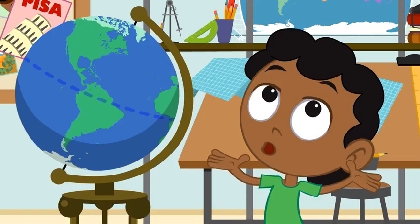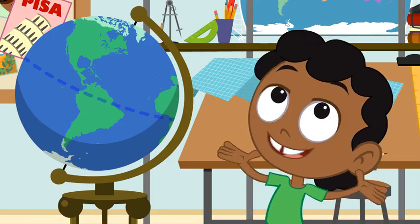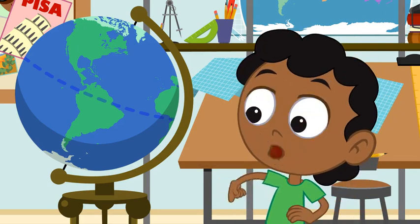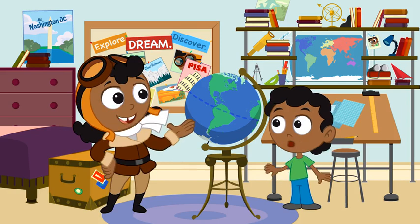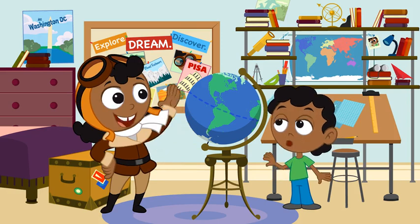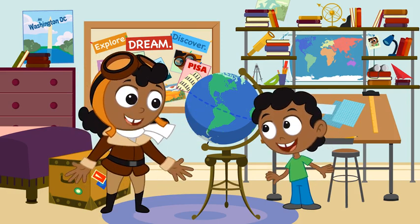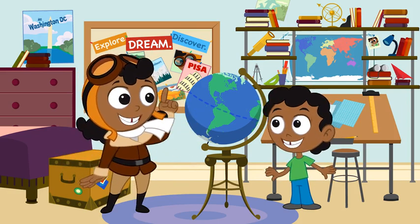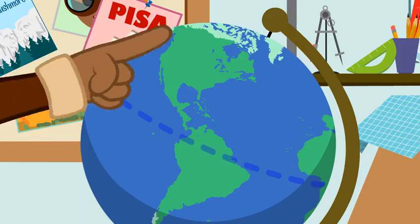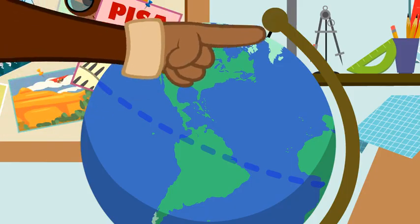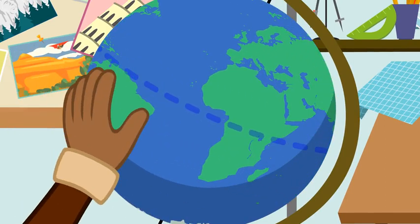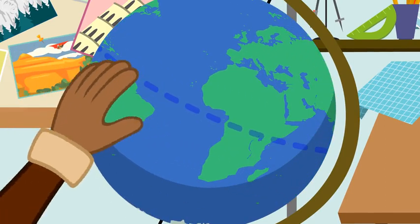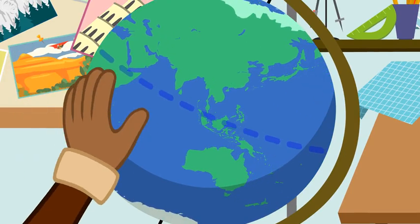They must have used a really big pencil to draw that line all around the Earth! No, silly! There's not a real line around the Earth. But you can stand where that line would be — then you'd be exactly halfway between the North Pole and South Pole. See how the equator cuts across South America and Africa and goes right between Asia and Australia?